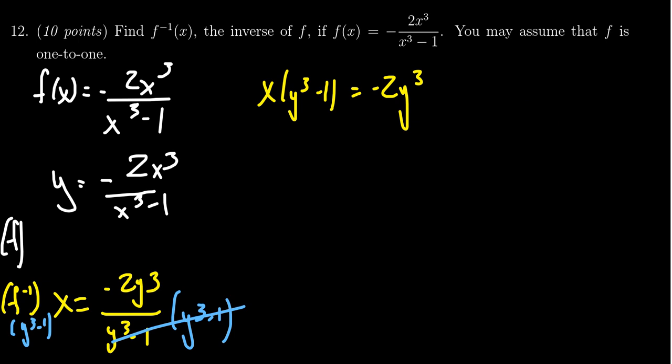So what we need to do is we need to combine together the y's. Now to accomplish that, I need to free up the y which is imprisoned inside of these parentheses right here. You can do that by distribution. Distribute the x through, which case we're going to get x times y cubed minus x. This is equal to negative 2y cubed.